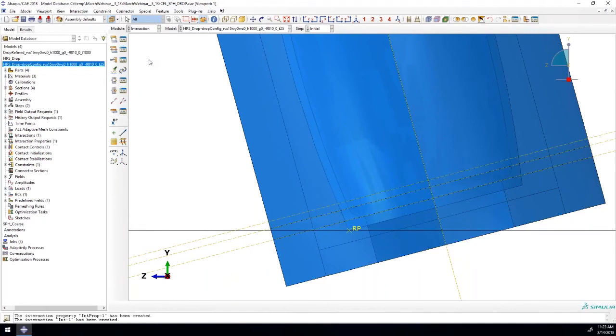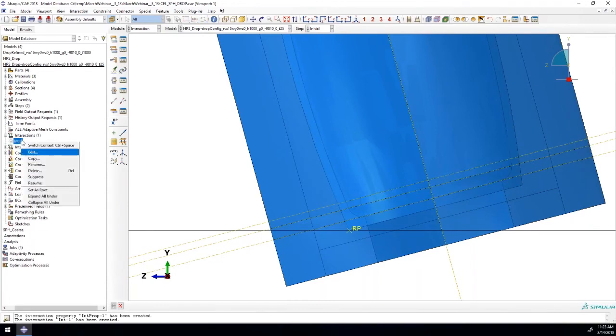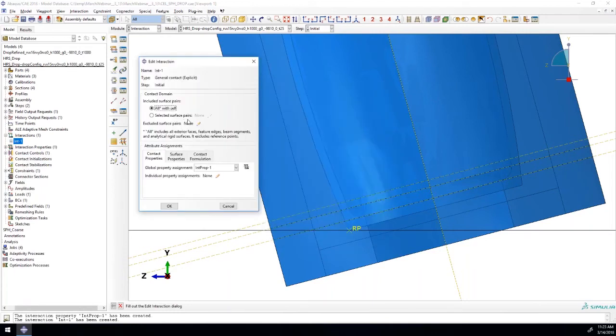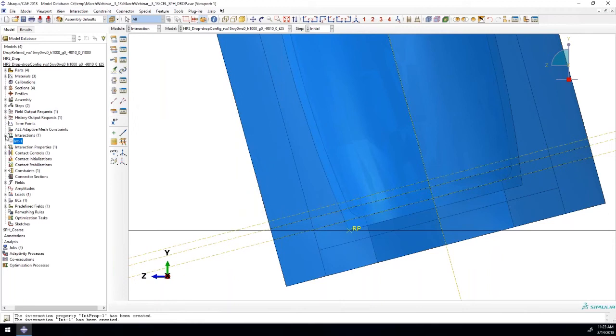Moving over to the interaction module, we do have that tie constraint that we defined earlier that was brought over through the plugin. We also have general contact defined here. This general contact feature is a one-click contact feature. It's all that we need to have defined. It's something that the plugin is going to create automatically. This is going to cover the contact between the bottle and the rigid floor, as well as the contact between the water and the bottle itself. This feature will capture both of those. There's nothing else that we need to do here. All the settings that are brought over with the plugin are just defaults in the software. So a very simple way to capture all of the contact that's occurring in this model, and something that is done automatically through the plugin for us.